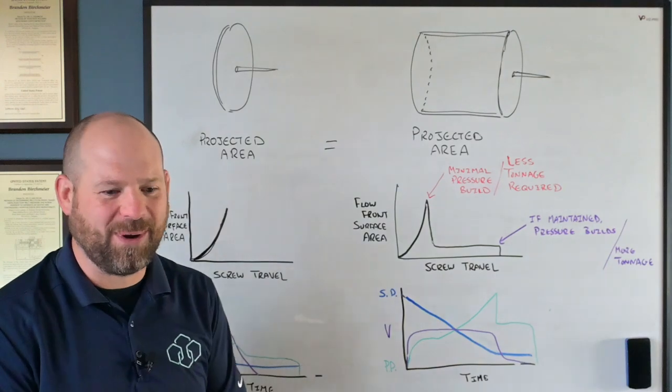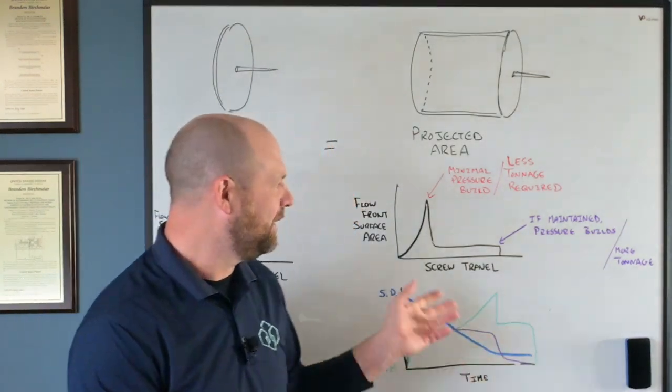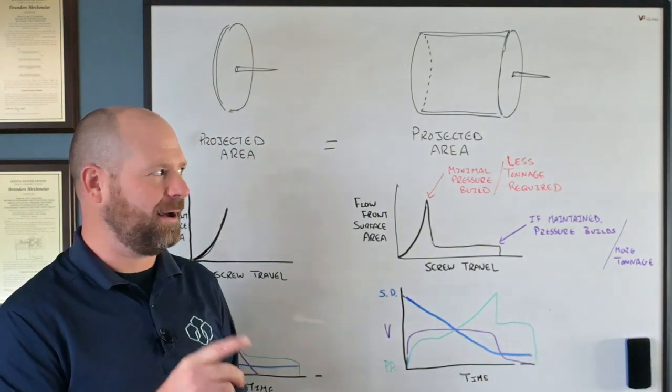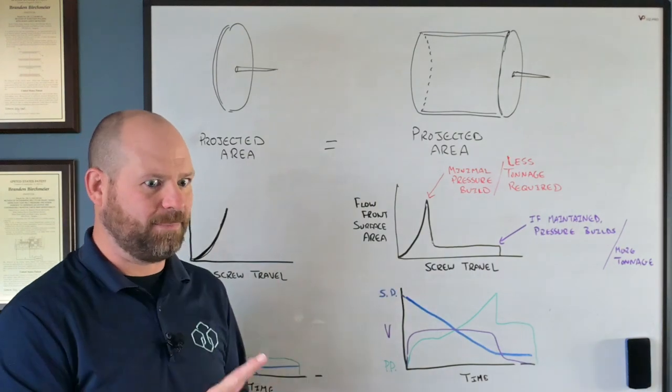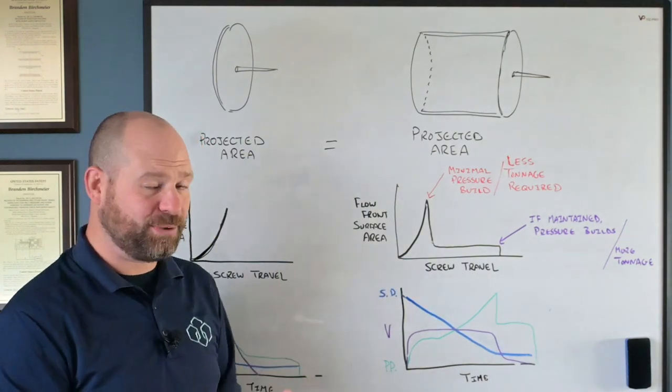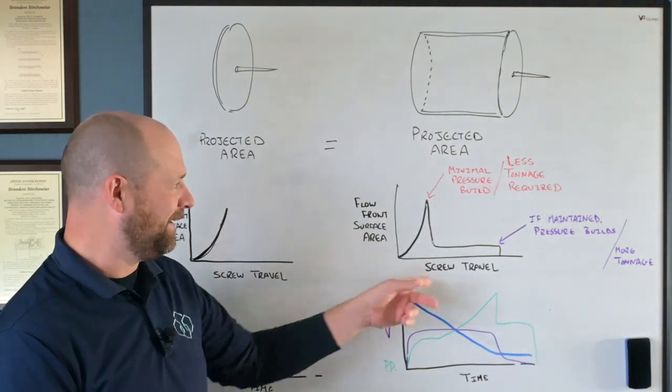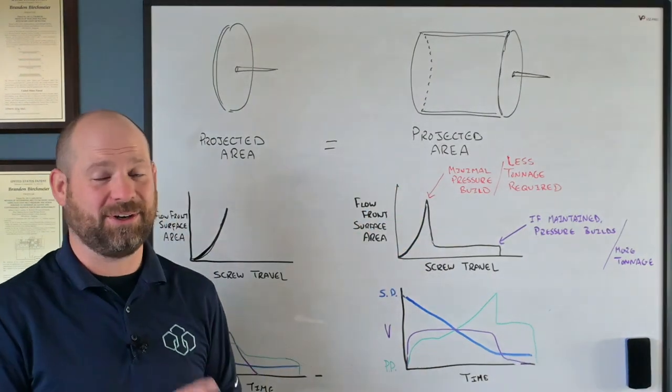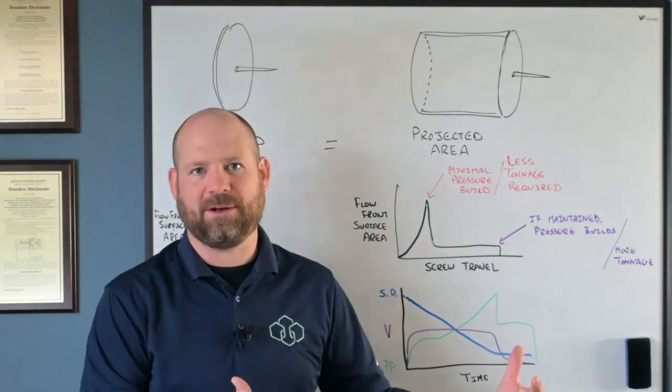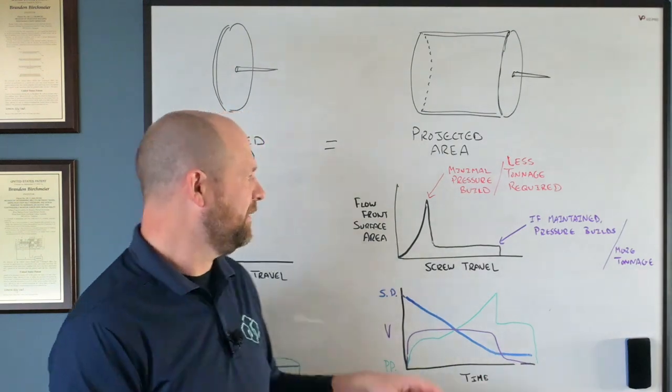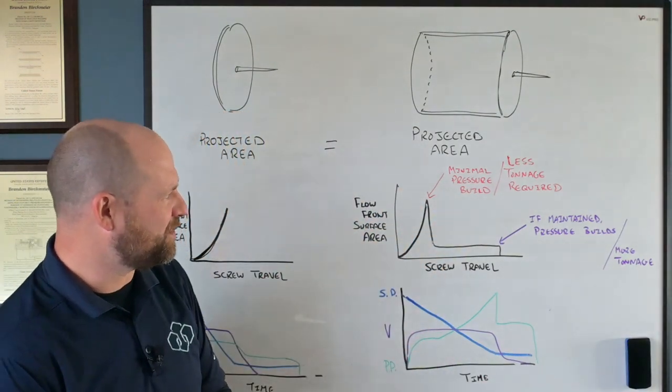So again, just a quick overview. I wanted to talk about Suhas' awesome article. Another way to think about how your part geometry can impact your pressure requirements and ultimately your tonnage requirements. And think differently about how you may want to approach that process when you kind of think about these relationships as well.